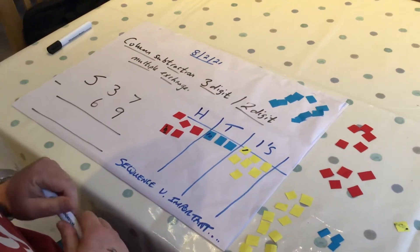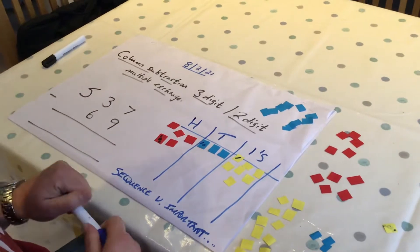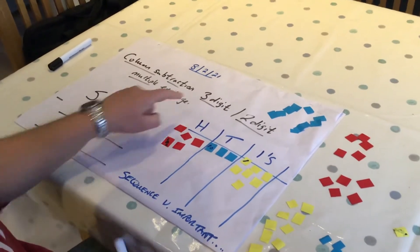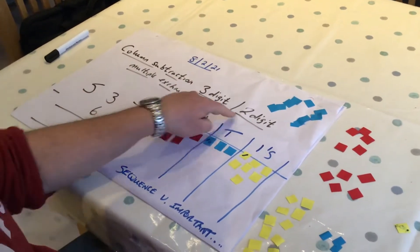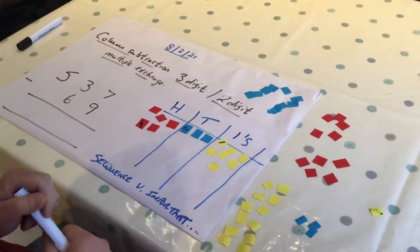Good morning, it's Monday the 8th today, last week before we get to half term. We're still doing column subtraction and we'll be doing it all week. This time we've got a three-digit number and a two-digit number, and we are going to have multiple exchanges.